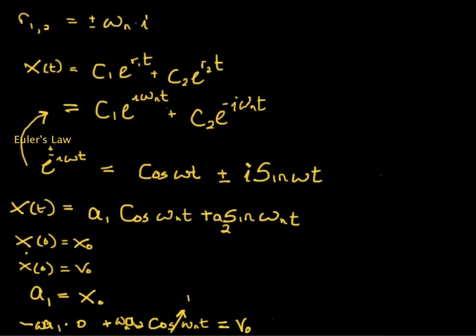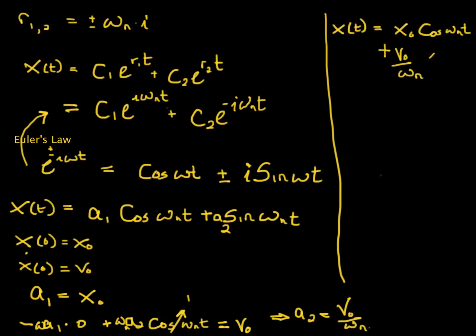What this leads to is a2 is equal to v0 over omega n. So then the final solution, putting it all together, is that x of t is equal to x0, which is your constant, cosine omega n t, plus v0 over omega n, sine omega n t. That is your solution.